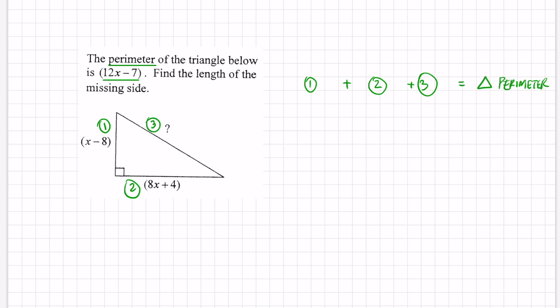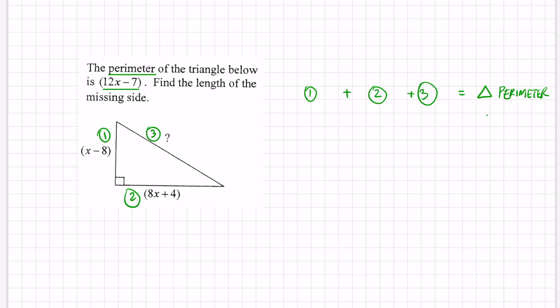We're given the perimeter so I can write that below. I know that my perimeter is 12x - 7 and we're also given number 1 and 2. It's right here, the two sides: x - 8 for my first side length and I'm adding it to 8x + 4. We don't have the third side length. Let's label that s. We don't have that and let's clean this up a little bit by simplifying.